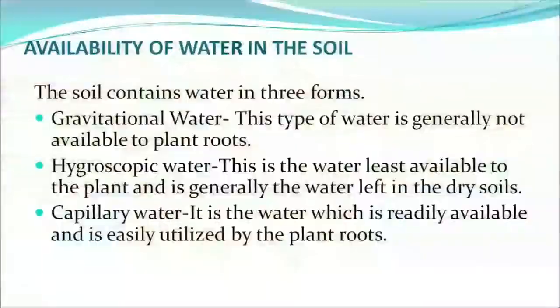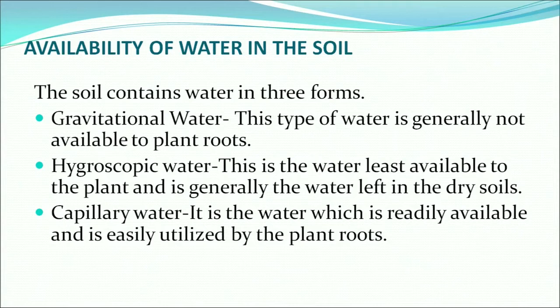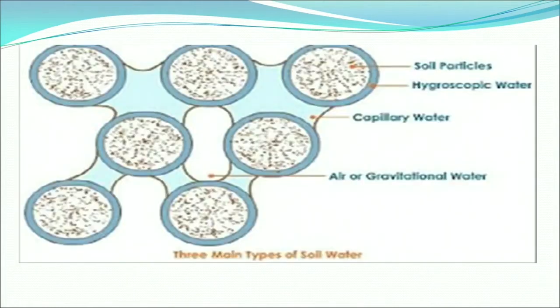Water is essential, but how does water become available in the soil? The soil contains water in three forms: gravitational water, hygroscopic water, and capillary water. Gravitational water is not generally available to plant roots as it is deep in the soil. Hygroscopic water is the least available and is generally left in dry soils. The available water is capillary water — it is readily available and easily utilized by plant roots.